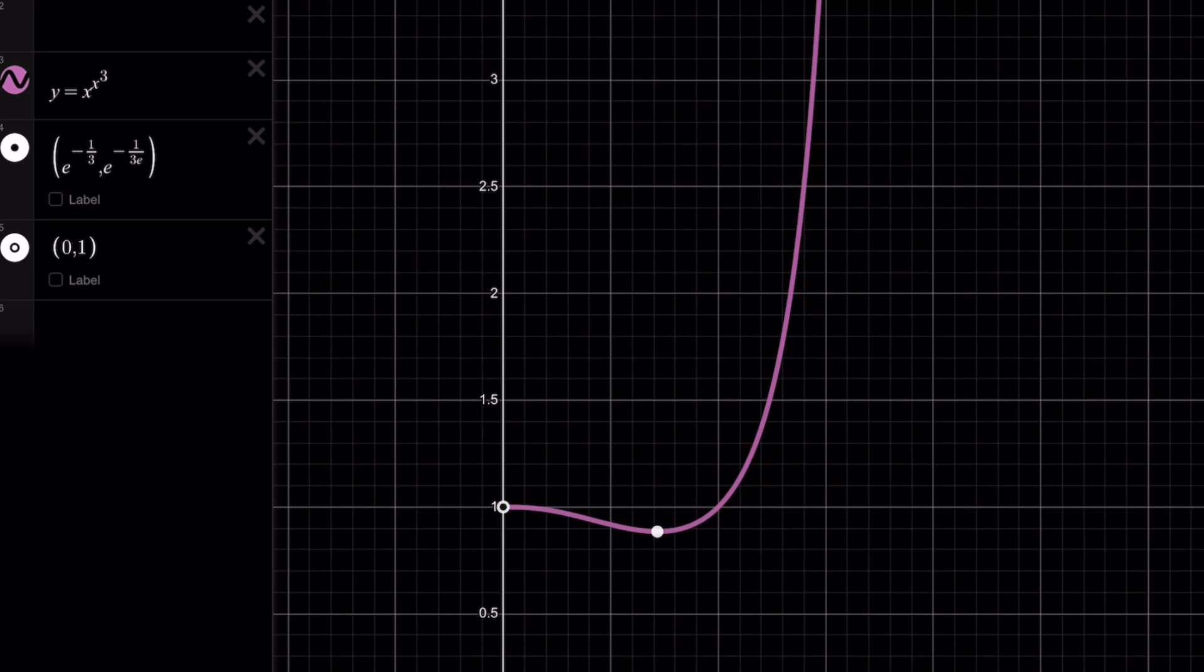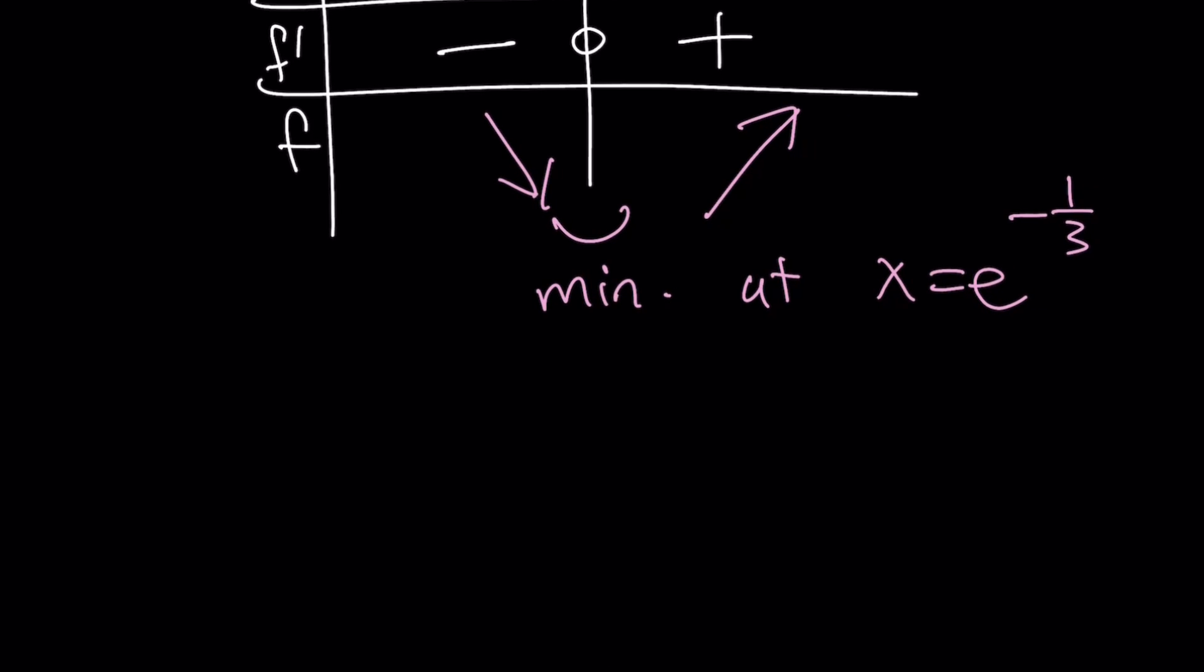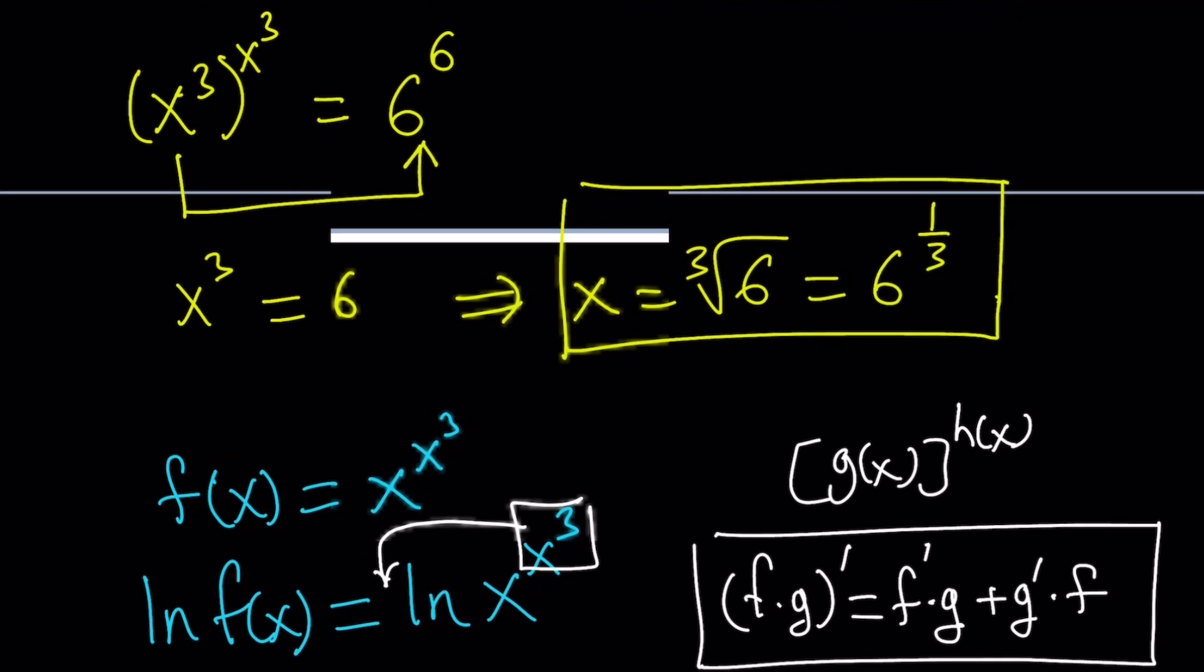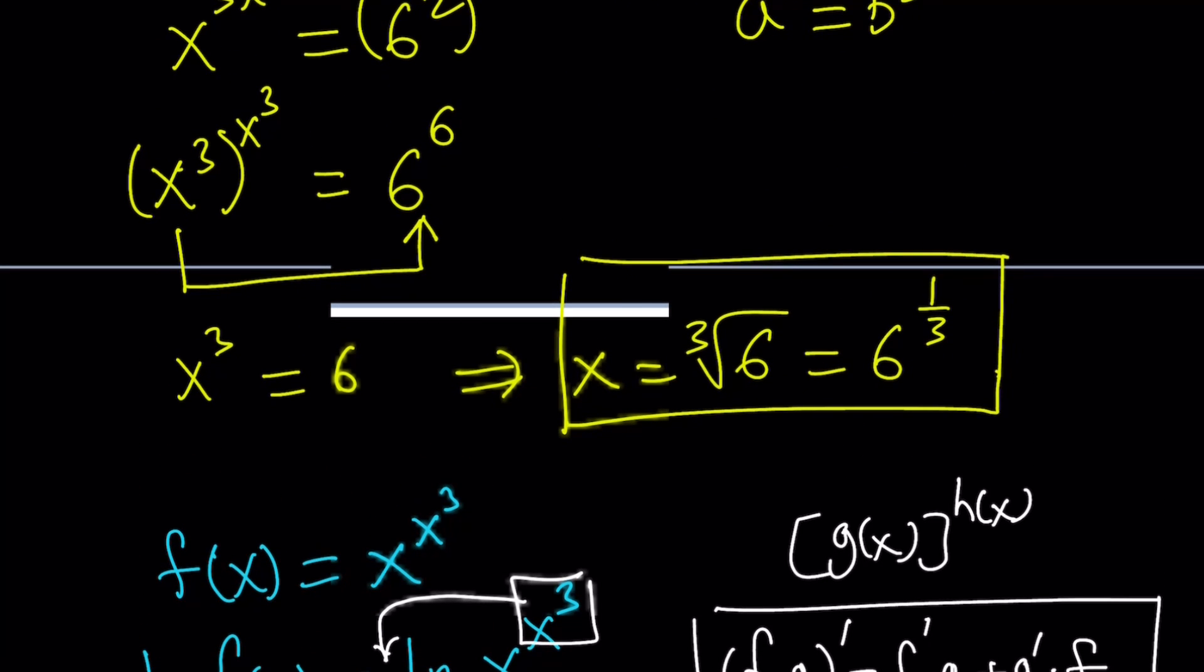Let's go ahead and go back and finish up the solution. So we have an increasing function on that interval, so we have a single solution. And that solution for our function was what? Did we find it? We did. It's the cube root of 6. And that is the only solution for this equation, which is x to the power x cubed equals 36.